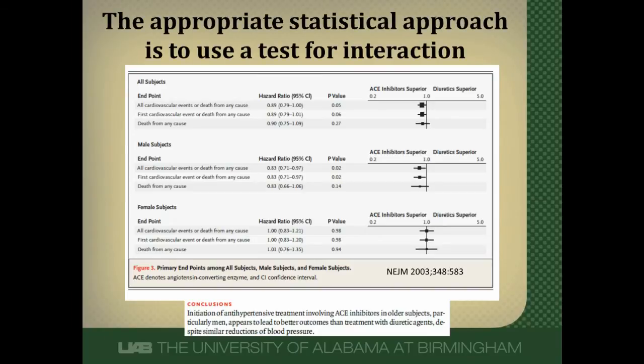The proper analysis is to do a test of interaction. This looks at whether the subgroup characteristic modifies the treatment effect — in this case, of an ACE inhibitor or a diuretic. Once you do that, you can see that the p-value for the test of interaction is 0.15. This is clearly not statistically significant, so there really is no difference in treatment effect by gender. The authors' conclusion is erroneous.